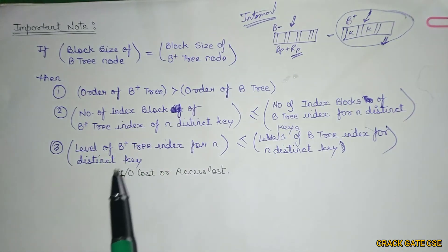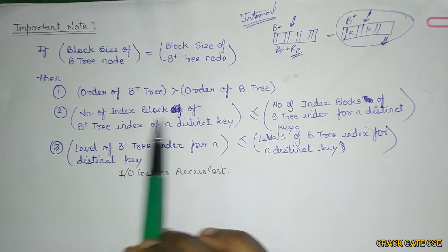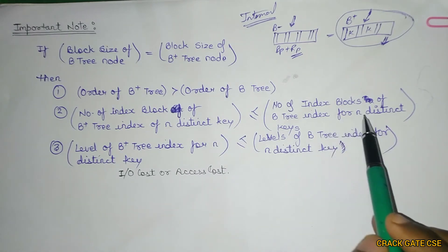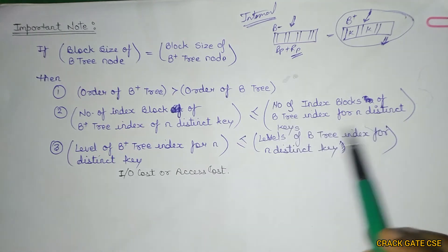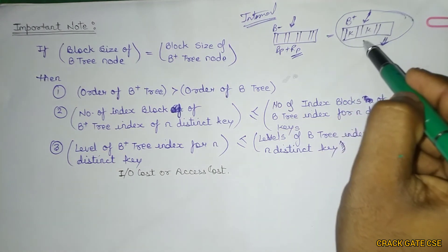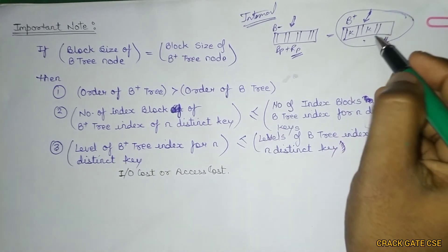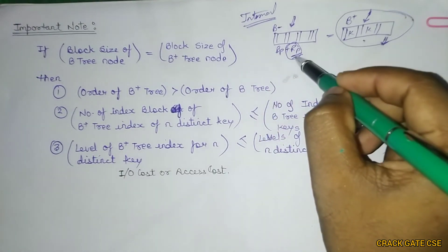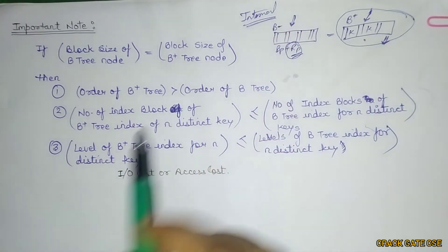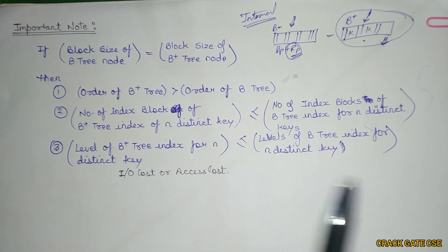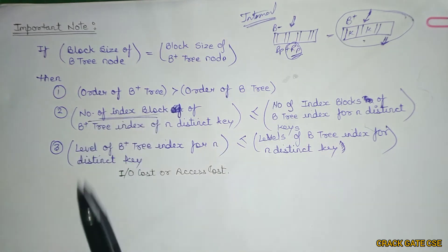The second property: the number of index blocks for a B+ tree index of N distinct keys will be less than or equal to the number of index blocks for a B tree index of N distinct keys. This means if we have to store N distinct keys, fewer index blocks are needed in B+ tree because we can store more keys in one block by utilizing the space freed from record pointers.